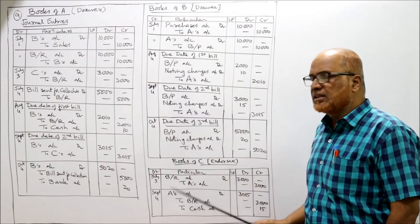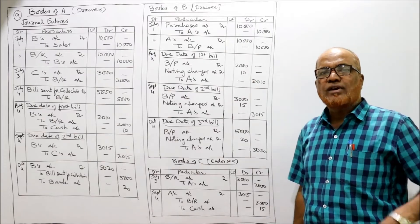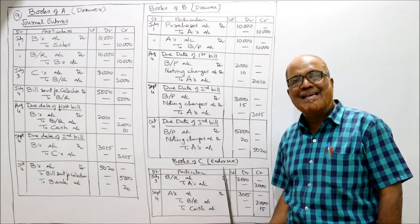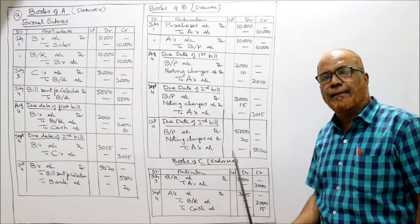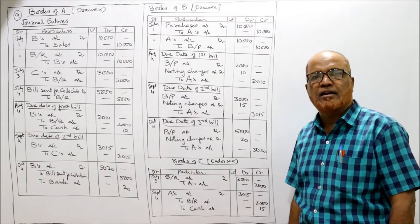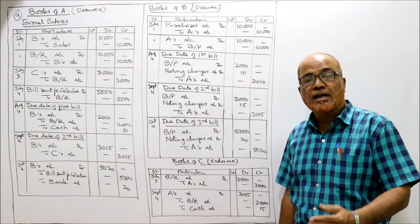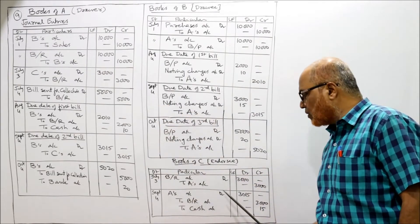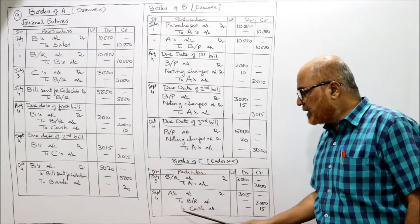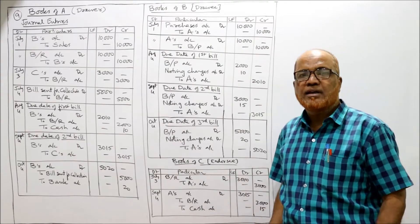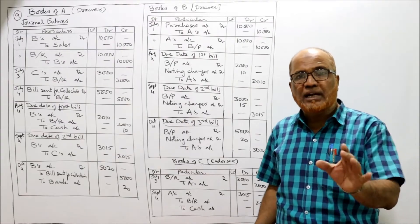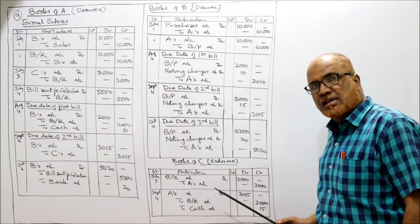Now lastly, entries in the books of C. First, C received the bill from A: bills receivable account debit to A's account 3,000, being the bill received from A. On the due date, C presents the bill to B but B dishonors it. C goes to the notary public and pays noting charges of 15 rupees, then recovers from A. Entry: A's account debit 3,015 to bills receivable 3,000 to cash 15 rupees. C paid 15 rupees from his own pocket and will recover that from A, being the bill dishonored on due date.